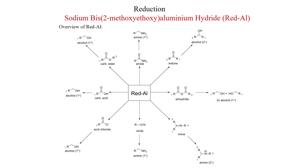Red-Al has similar reactivity to lithium aluminum hydride. Whatever reductions LiAlH4 undergoes, Red-Al also performs similar reductions: anhydride goes to alcohol, imines give amine, nitrile goes to primary amine, acid chloride goes to alcohol, carboxylic acid goes to alcohol, ester goes to alcohol, amide goes to amine, and ketone as well as aldehyde go to alcohol. Red-Al is less pyrophoric than lithium aluminum hydride, so it is more convenient to use and has wider solubility.